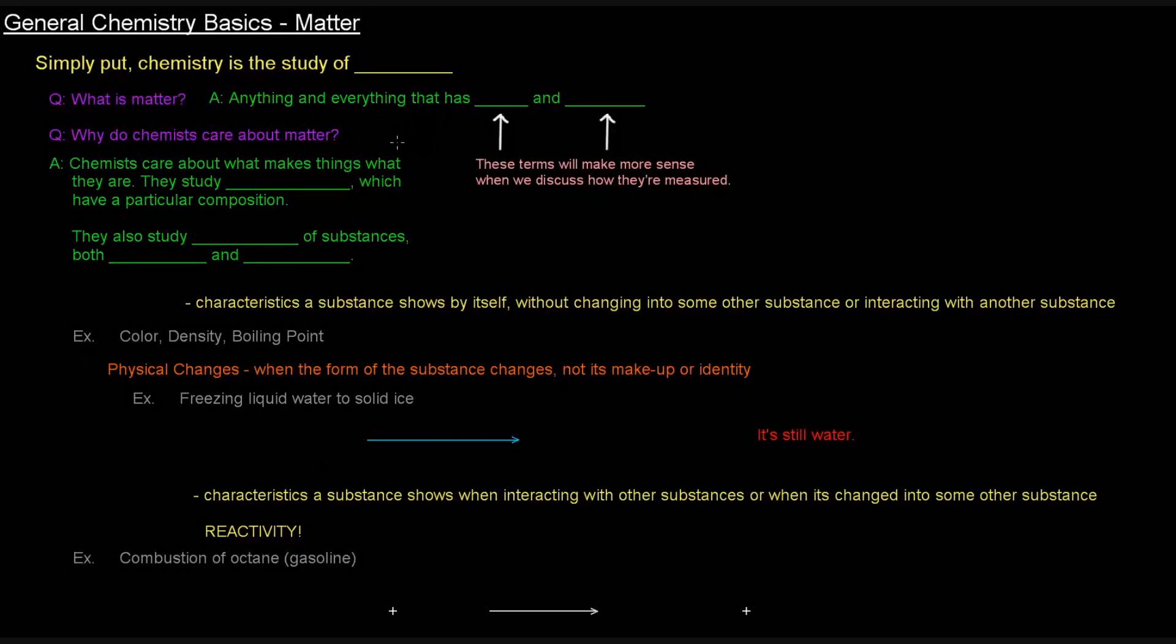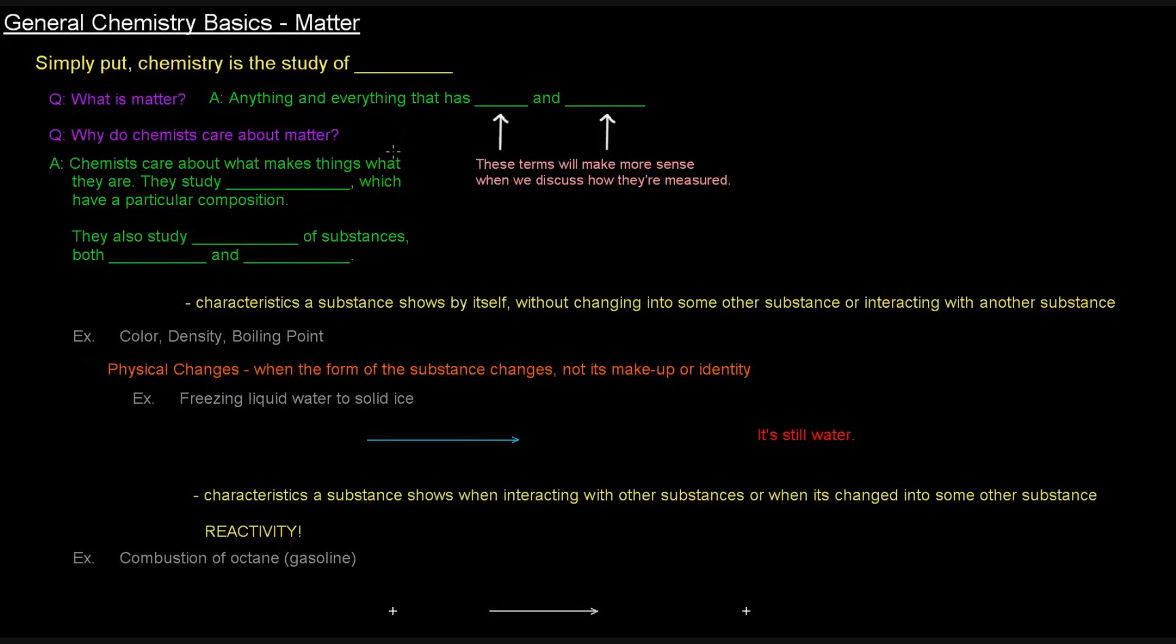Okay, so general chemistry. Before we can study and understand the complexities of chemistry, we really need to know certain basics, including definitions and things like that. So this first series in the GChem series is about the basics and things that you need to know in order to understand chemistry. We're going to start with matter. But before we can really talk about chemistry, we've got to know what is chemistry? Simply put, chemistry is the study of matter.